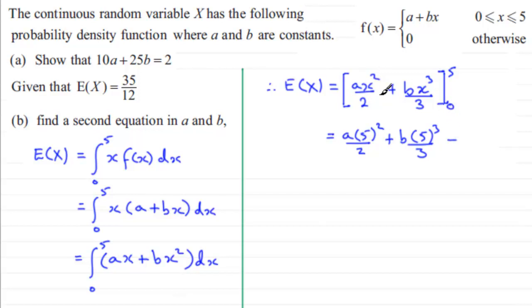This is going to be 0, this term here is going to be 0, so we've just got minus 0. So cleaning these two terms up, we've got 25a over 2, and for this one we've got 125 (5 cubed is 125) b divided by 3. Now we're told that E(X) equals 35 over 12, so we can equate that to 35 over 12.